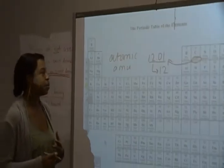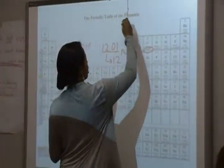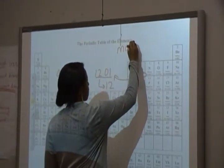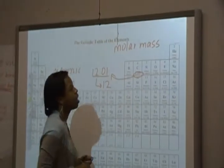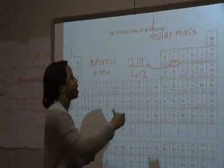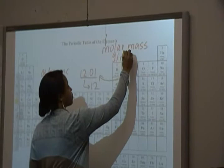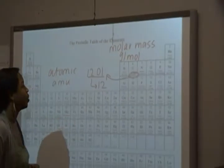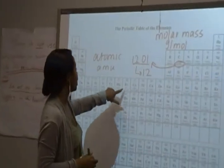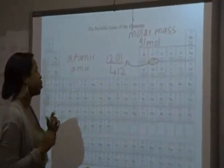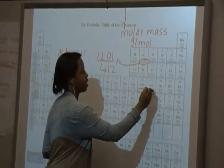But in lab, you often use grams and moles, and the way you use grams and moles is this conversion unit called molar mass. The units for molar mass are grams per mole. For each of these atomic masses, the numerical value for molar mass is also the numerical value for the atomic masses.